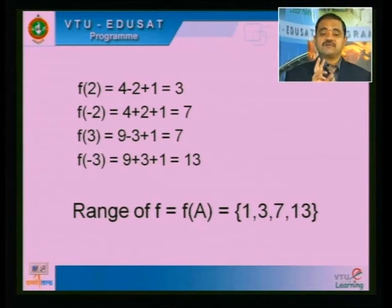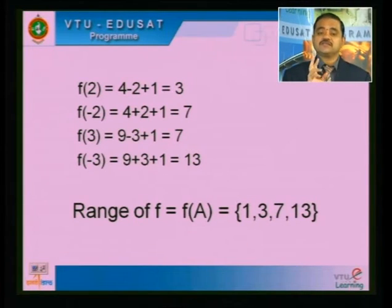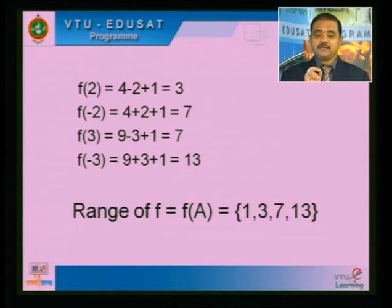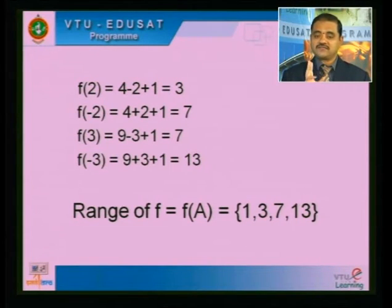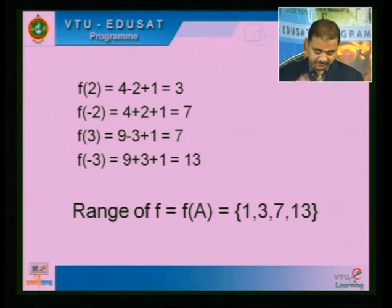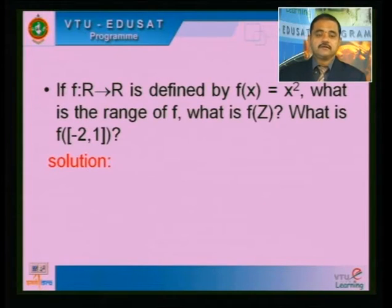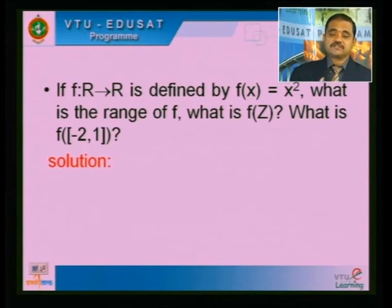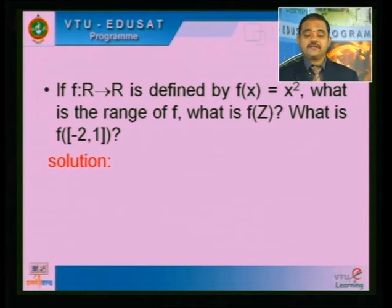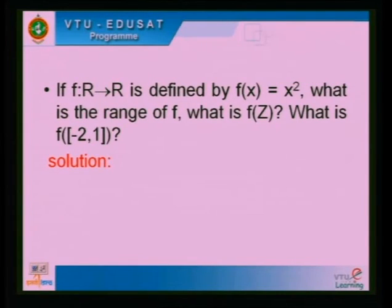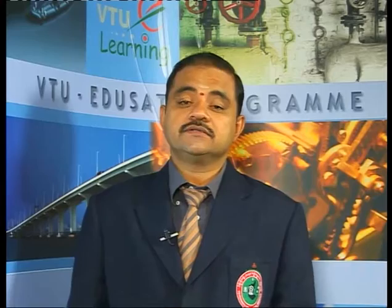Remember, 7 comes twice and 3 comes twice in the solution, but we write each only once: {1, 3, 7, 13}. These are standard university problems repeatedly asked in examinations for 4, 5, or 6 marks, so you should be able to do them carefully.